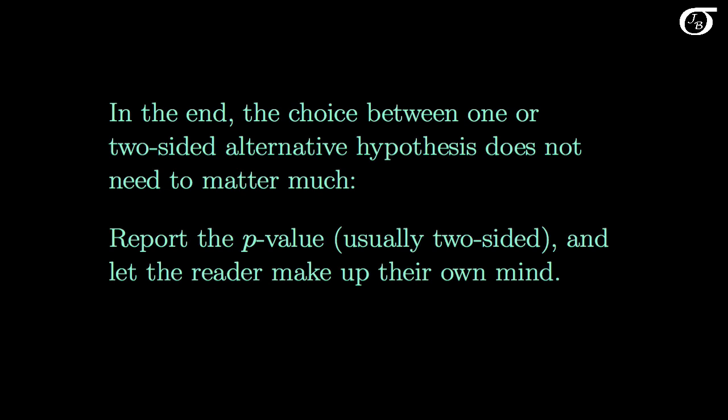In the end, the choice between one- or two-sided alternative hypothesis does not need to matter much. Report the p-value, say whether it's a one-sided or two-sided p-value — usually two-sided — and let the reader make up their own mind. A knowledgeable person can make the appropriate adjustments if they feel that a one-sided alternative was more appropriate in that case.